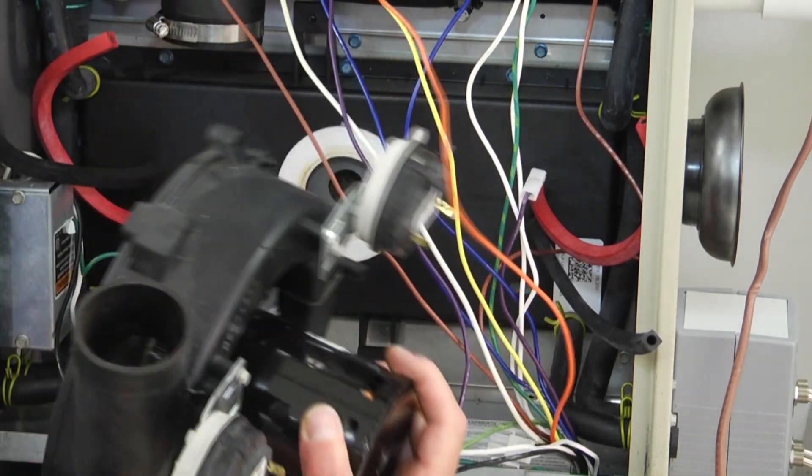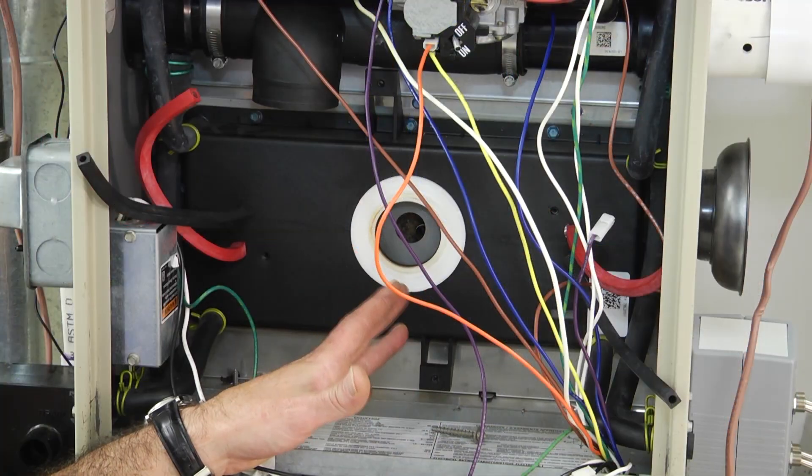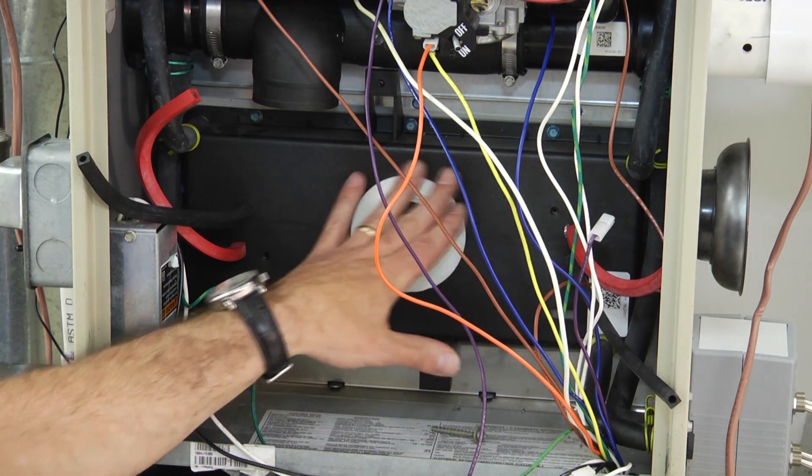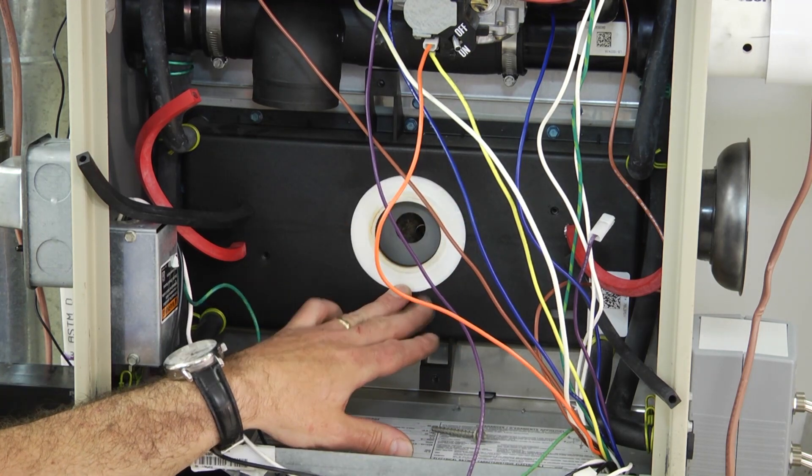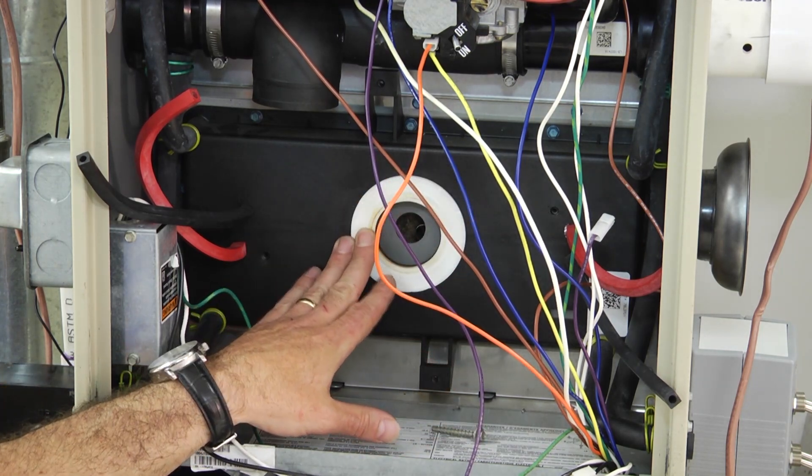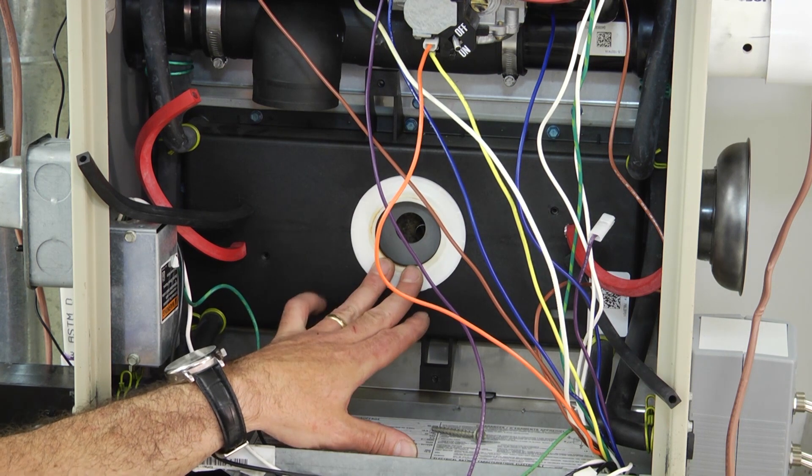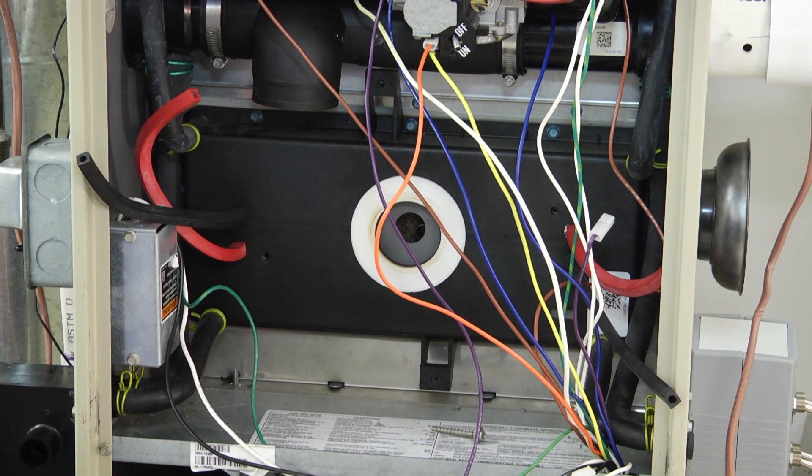So there you have it. There's my venter motor with the motor disconnected. So again, just make sure that the gasket material is intact, it's not deteriorated in any way. This one here looks pretty good, so I can go ahead and put the new motor back in there.